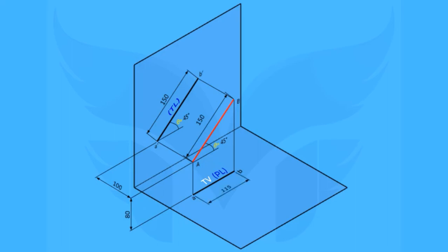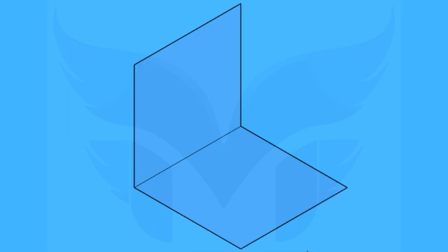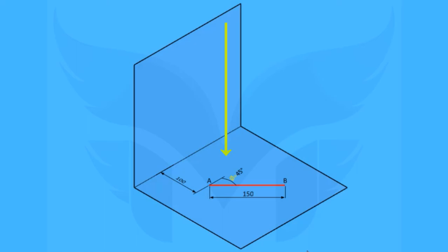Now let's look at another example of this case. Here we imagine a line lying on the HP and inclined to the VP. End points are A and B, length is 150 mm. A is 100 mm in front of the VP and the line is inclined with the VP at 45 degrees. We can see this angle from the top view, not the front view.